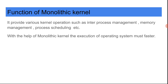Regarding the functions of the monolithic kernel: it provides various kernel operations such as inter-process management, memory management, and process scheduling. With the help of the monolithic kernel, the execution of the operating system is much faster. This is because there is a single address space connection with the application and hardware, so the speed of the system is faster compared to a microkernel operating system.